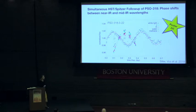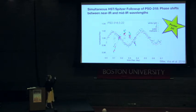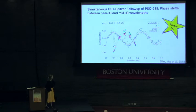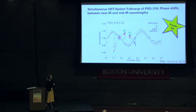If you want even more follow-up observations of PSO318, we obtained simultaneous HST and Spitzer observations. They showed dramatic phase shifts — the crosses are the mid-infrared light curve and the HST data are the colored dots. If you want to learn more about that, you can look at poster 24, which is Beth's poster, or look at our paper which is on the archive.